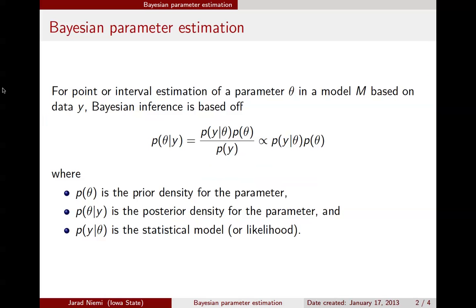Here's a slide. So just to recall that Bayesian inference, Bayesian parameter estimation, is based off of deriving the posterior distribution for the parameter. That is, the distribution for the parameter conditional on the data.